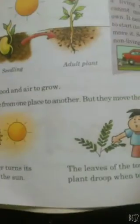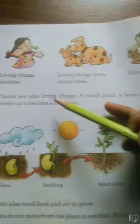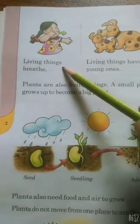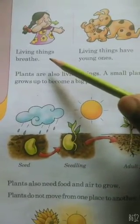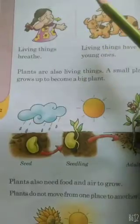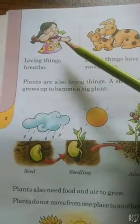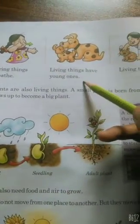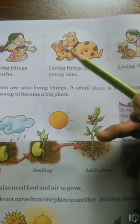Now come to page number two. Living things breathe — we know that all living things breathe. Fish which live in water also breathe, and they breathe through their gills. Living things have young ones; it means they can reproduce — they can produce their babies.